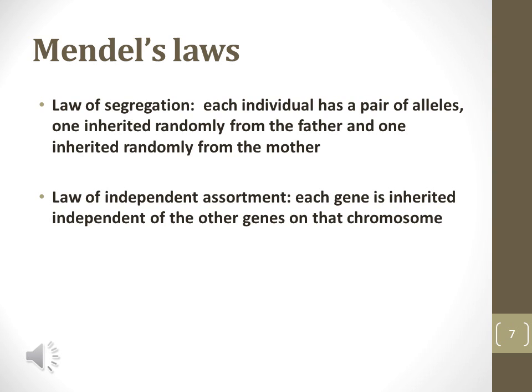The law of independent assortment was also discovered by Mendel. This law explains that two traits are distributed independent of each other in the first generation. Independent assortment explains that the first generation may be any combination of their parents' traits; otherwise, all individuals of the first generation would be identical to either mother or father.